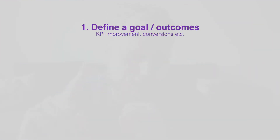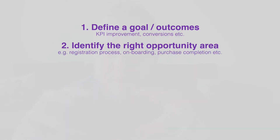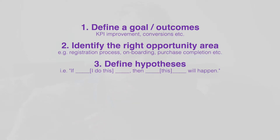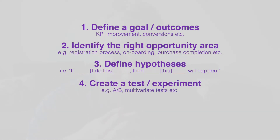Number three: a really interesting five-step framework for designing with data. Step one is to define a goal — exactly what you want to achieve. Step two is to understand what the opportunity looks like and what area you can approach. Step three is to come up with a hypothesis — what you're going to do, why you're going to do it, and what the outcome will be at a high level.